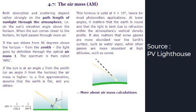Both absorption and scattering depend rather strongly on the path length of sunlight through the atmosphere, i.e., on the sun's elevation angle above the horizon. When the sun comes closer to the horizon, its light passes through more air. If the sun shines from 90 degrees above the horizon — from the zenith — the light passes through optical air mass one, and the spectrum is then called AM1. If the sun is at an angle Z from the zenith or an angle H from the horizon, the air mass is higher. To a first approximation, assume that the Earth is flat.